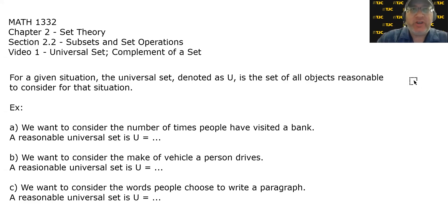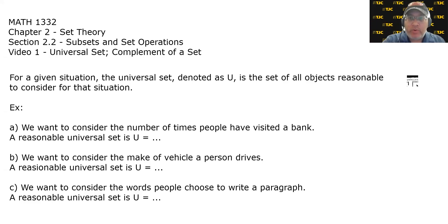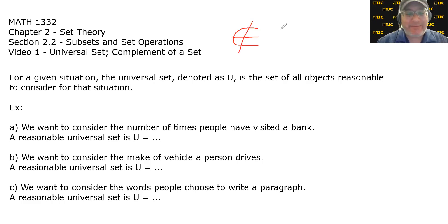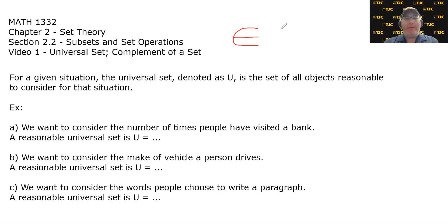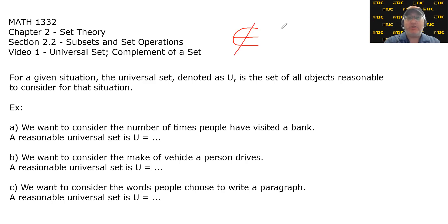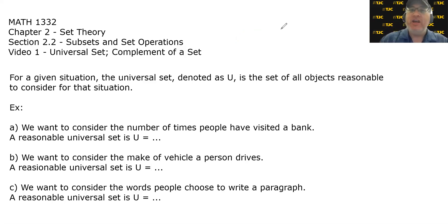In the previous series of videos, we talked about the idea of a set being a collection of objects. We talked about the objects within a set being called elements, and we were introduced to a couple of symbols. We were introduced to the symbol for 'is an element of,' and the symbol for 'is not an element of.' Both of those express a relationship between an object and a collection of objects.